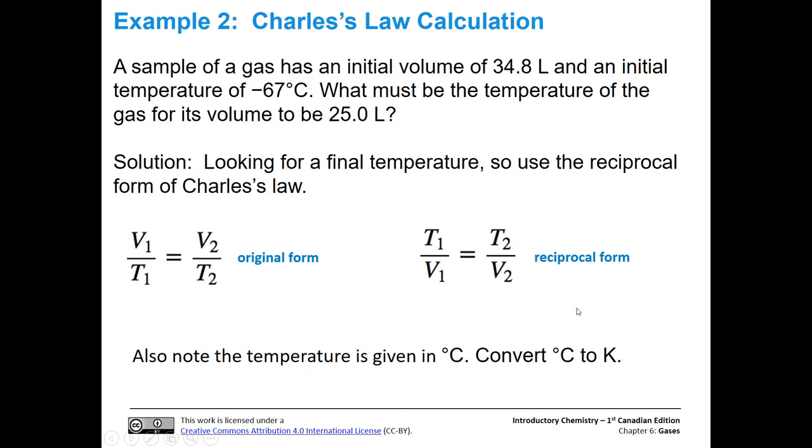Same thing with T1 and T2. T1 and T2 are equal to each other in the denominator in the original form, and then in the numerator in the reciprocal form. So that's just another little trick to keep in your book, especially if you're not confident in your algebra. But if you are confident in your algebra, then you should just solve for T2.